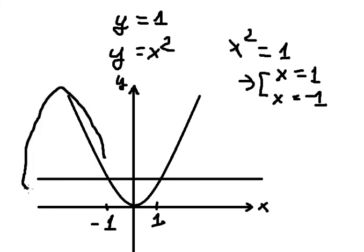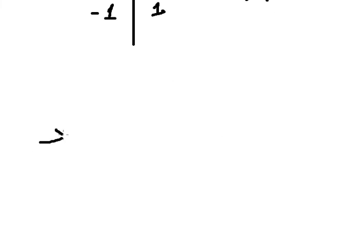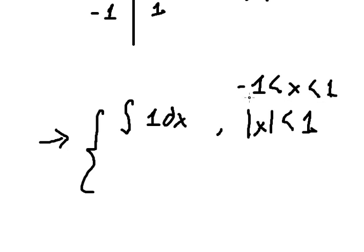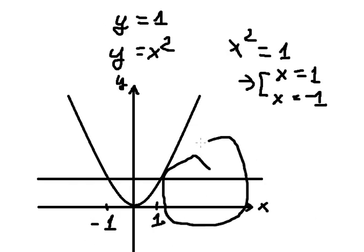And when x is smaller than negative 1, x squared is bigger. So the area there corresponds to y equals to x squared. When we write the answer, the integration for the first region is from negative 1 to positive 1, where x is between negative 1 and positive 1. For the second region, we use x squared, meaning the absolute value of x is greater than 1, covering the regions beyond negative 1 and positive 1.